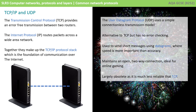The third protocol in this set you need to know about is UDP, the User Datagram Protocol, and it uses a simple connectionless transmission model. It's an alternative to TCP, but unlike TCP, it has no error checking. It's used to send short messages using datagrams where speed is considered more important than accuracy. It maintains an open two-way connection and is ideal, therefore, for things like online gaming. It has largely become obsolete as it's considered less reliable than TCP.